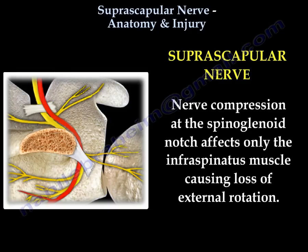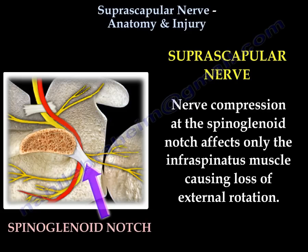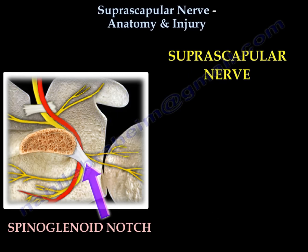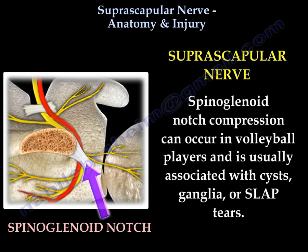Nerve compression at the spinoglenoid notch affects only the infraspinatus, causing loss of external rotation. The spinoglenoid notch compression can occur in volleyball players and can be associated with cysts, ganglia, or labral tears.